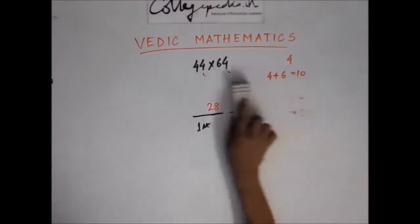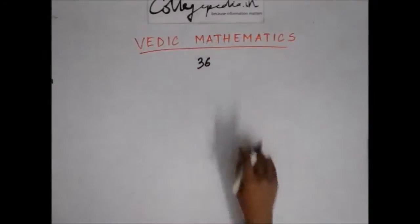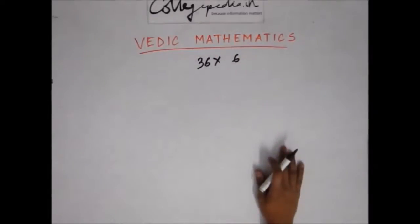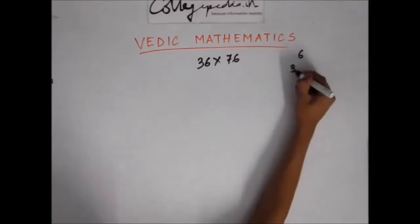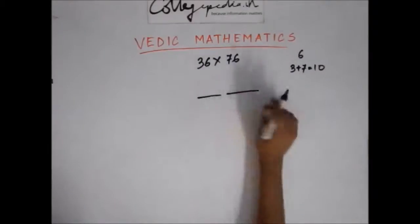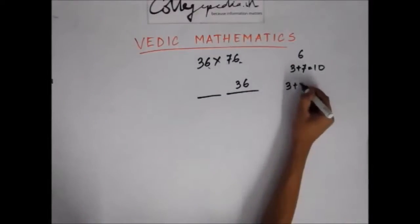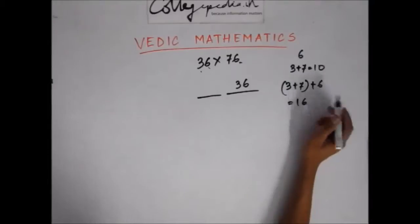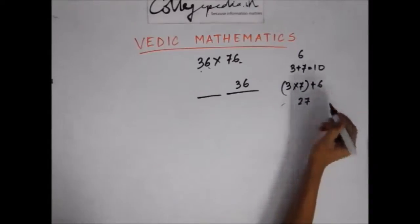Let's take another example: 36 multiplied by 76. Here again the common digit is 6 and the first digits add up to 10. The answer lies in two parts. The second part is the product of the common digit: 6 × 6 = 36. For the first part, multiply the first digits and add the common digit: 3 × 7 = 21, plus 6 is 27. So the answer is 2736.